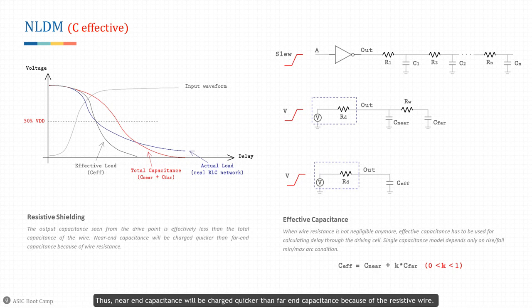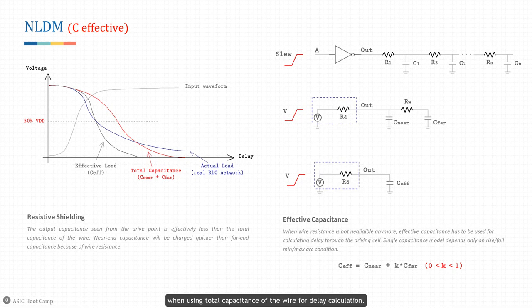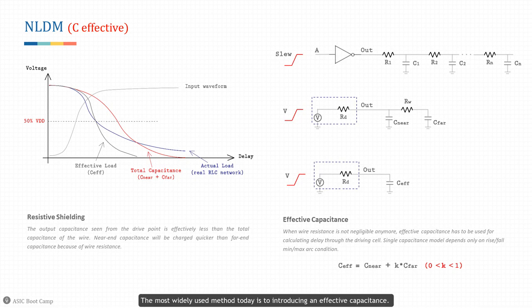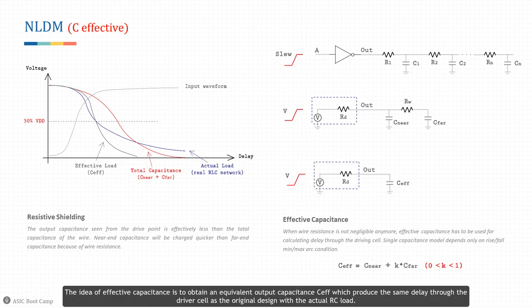Thus, near-end capacitance will be charged quicker than far-end capacitance because of the resistive wire. The output waveform for the actual load will be crossing the 50% transition bar at a much earlier timestamp than when using total capacitance for delay calculation. Recall that the NLDM table is characterized with output wire resistance equal to zero, so it cannot be used directly. We have to modify that model — the most widely used method is introducing an effective capacitance CEF, which produces the same delay through the driver cell as the original design with the actual RC load.